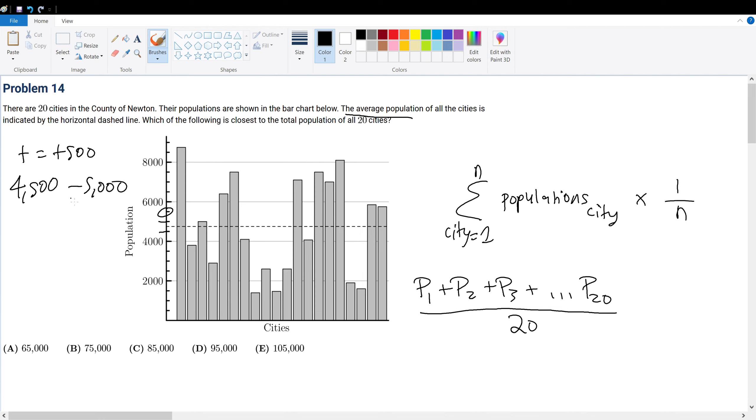The dashed line looks like it's smack dab between 4500 and 5000. It's the middle number. How do you find the midpoint? That's just 4500 plus 5000 divided by 2, which is 9500 divided by 2, which is 4750. So the average must equal 4750.